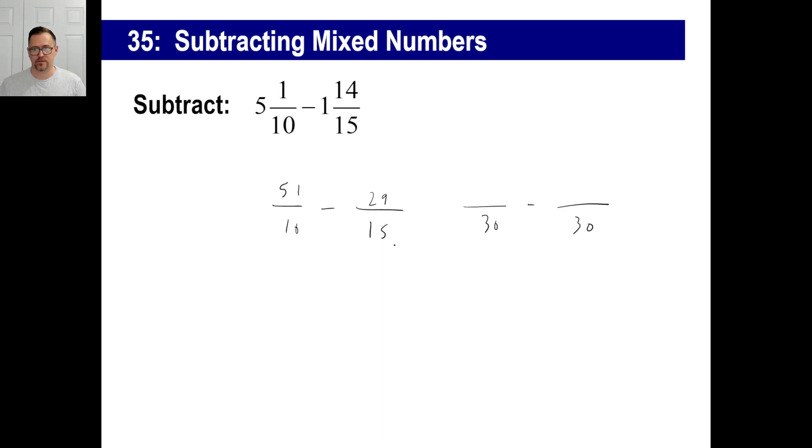Ten times three will give you thirty. So fifty-one times three is a hundred fifty-three. Fifteen times two is thirty. So twenty-nine times two is fifty-eight. So one hundred fifty-three minus fifty-eight is ninety-five over thirty. Then we just make this into a mixed number. Thirty into ninety-five gives us three. There is, of course, five left over. Five over thirty is just what we saw just a second ago. So that reduces to one-sixth. So either one of those is okay if you want to use.